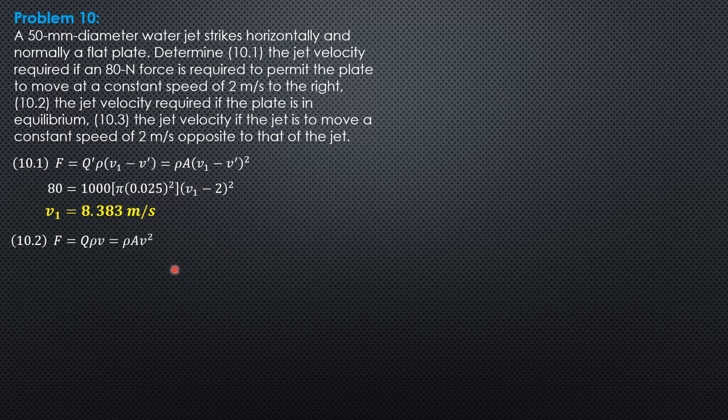Density area velocity square. So, 80 equals density area 0.025 square, then velocity square. Velocity, jet velocity V is also V1 equals 6.383 meters per second.